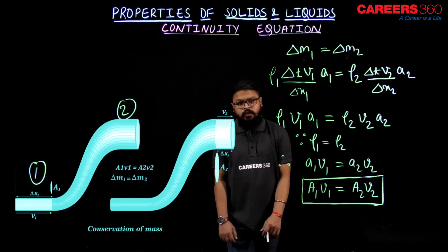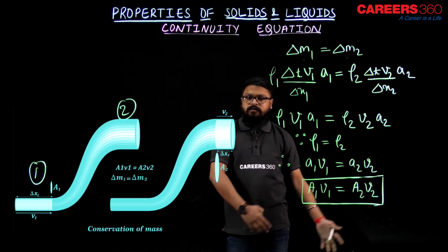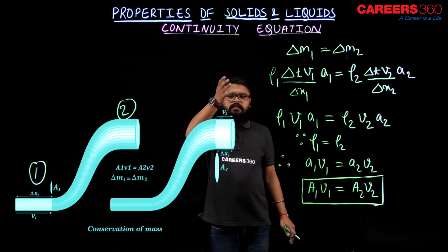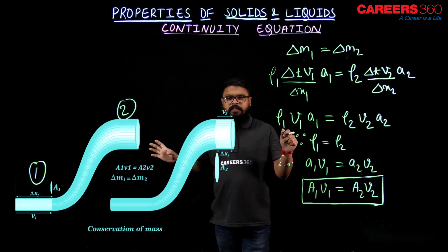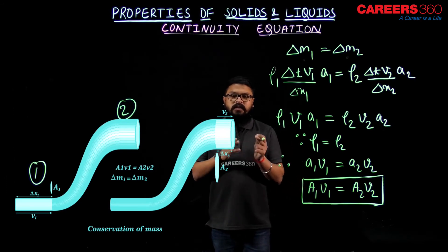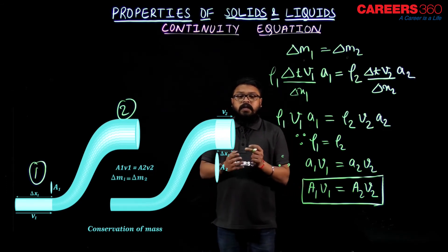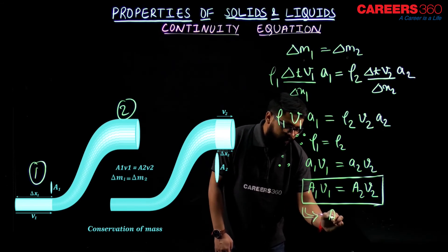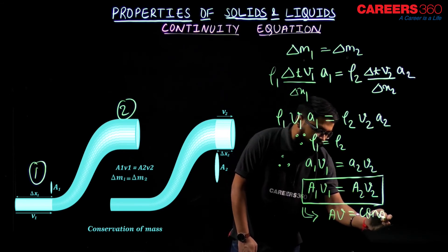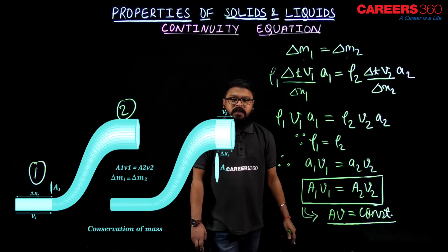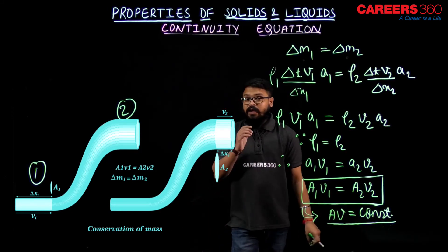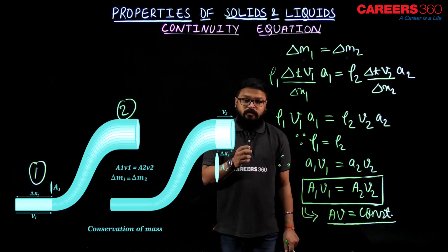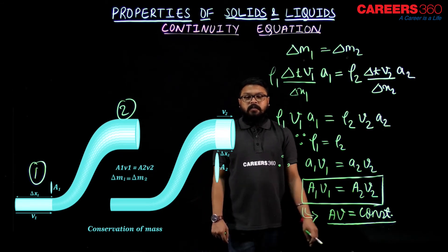So A1V1 equals A2V2, or A3V3 equals A4V4 equals A5V5. If we consider all the cross sections from start to end, the product of the area of cross section and the velocity of the fluid in steady flow would be constant: AV equals constant. If the area of cross section is more, the velocity would be less; if the area of cross section is less, the velocity would be more — because the product must remain constant.